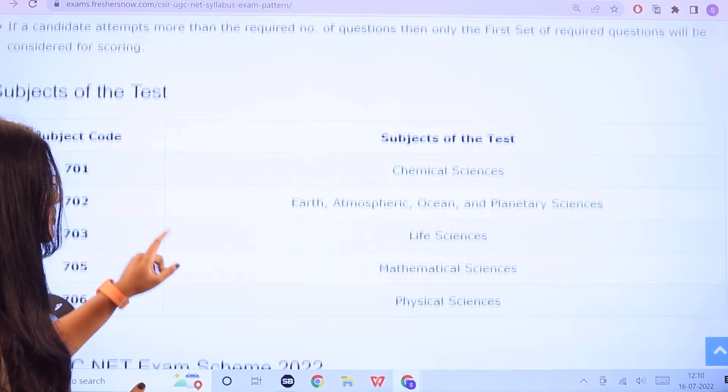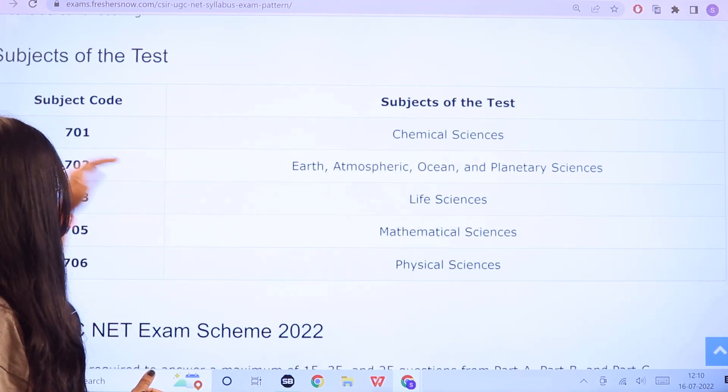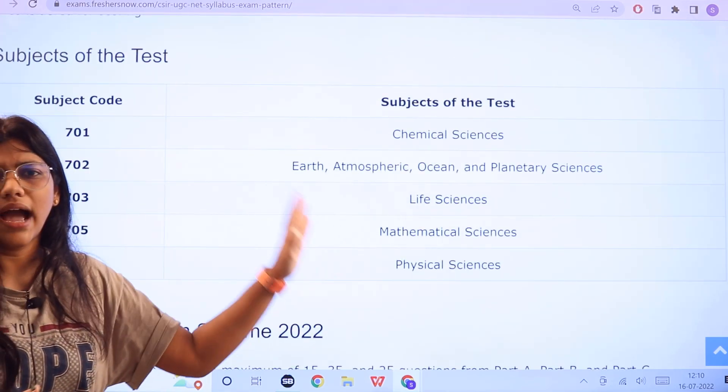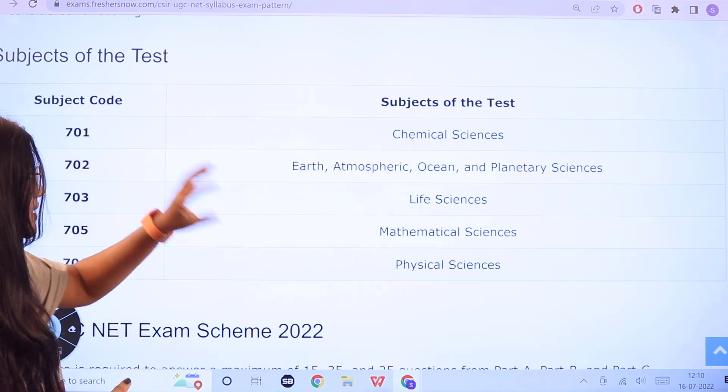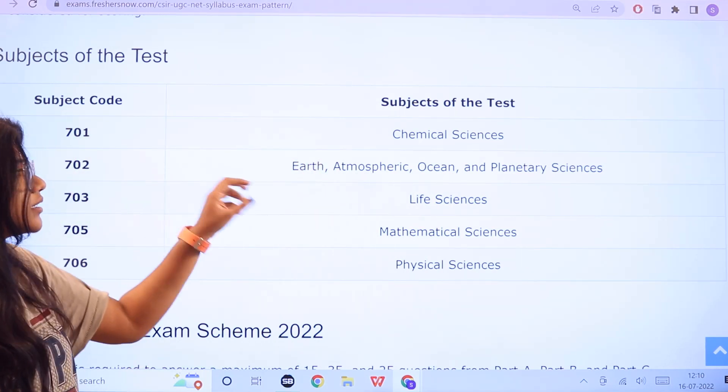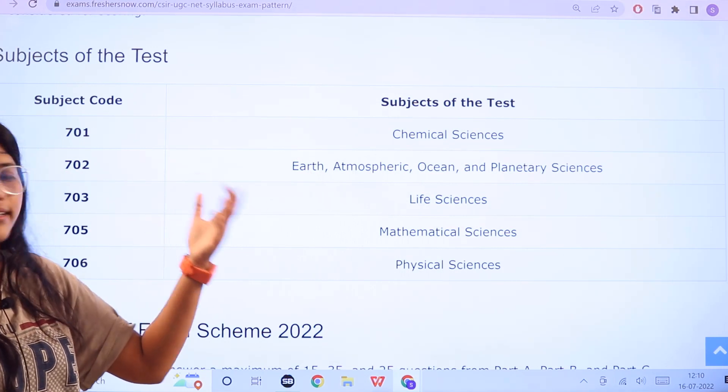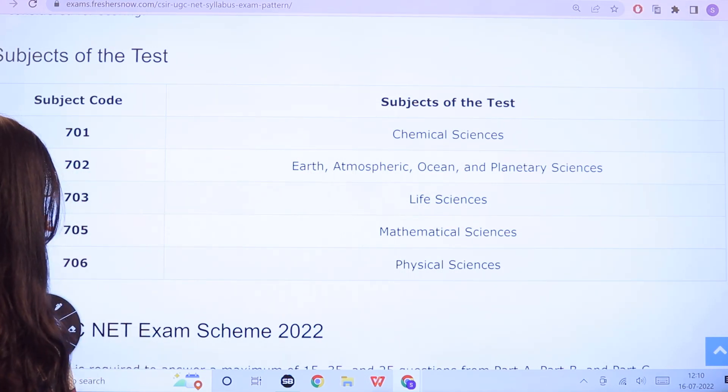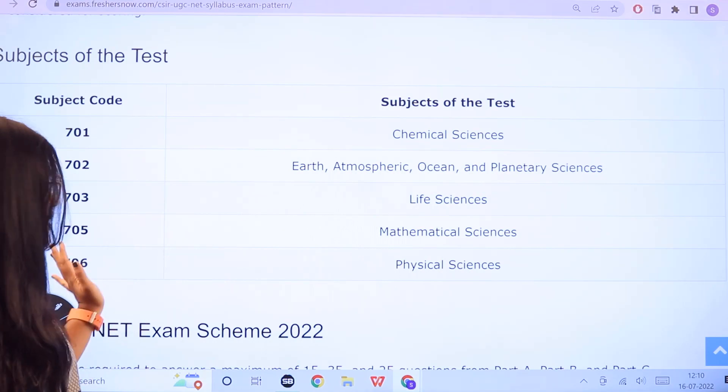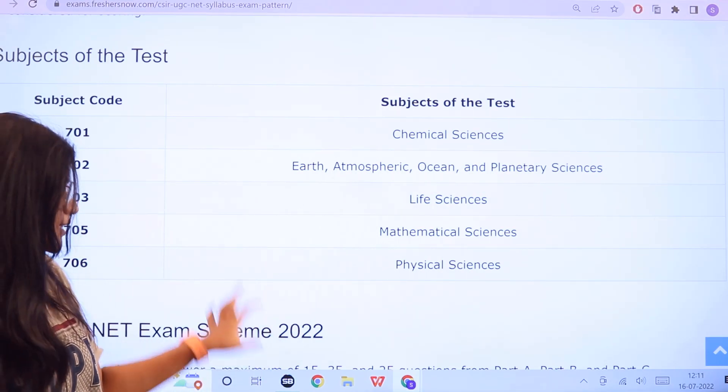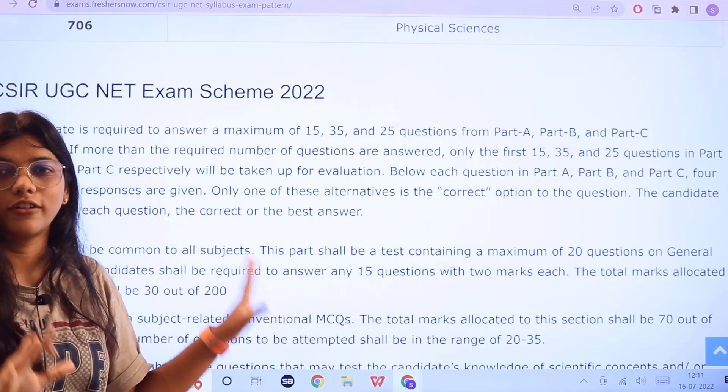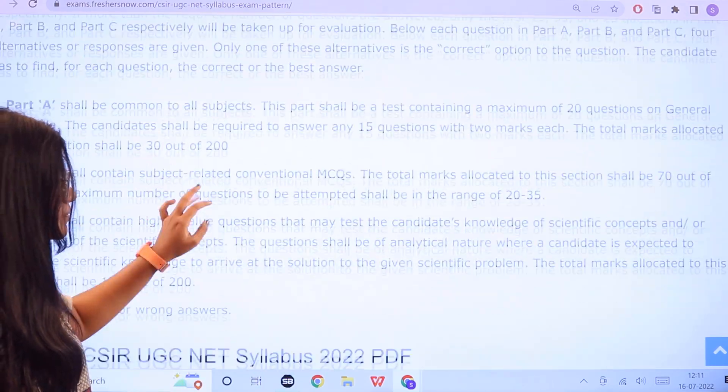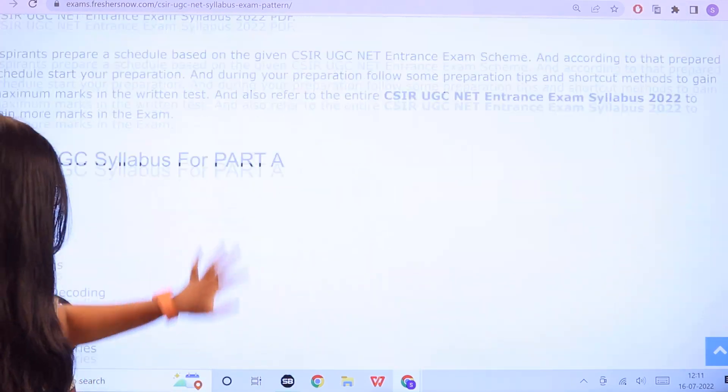And here you have the subjects of the test, the subject code just to give you a quick analysis. 701 is the subject code for chemical sciences. 702 Earth, Atmosphere, Ocean and Planetary Sciences. 703 is for life sciences. 705 is for mathematical sciences and 706 is for physical sciences. This is the whole section that we have already covered from the table format. So next off we are going to see the syllabus.